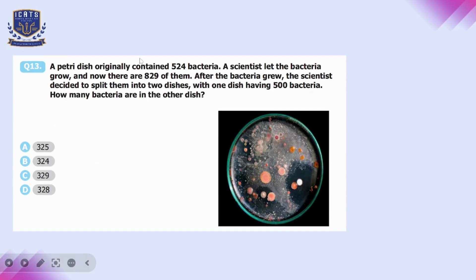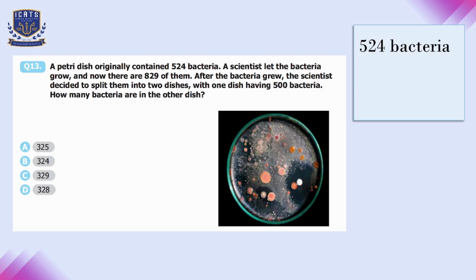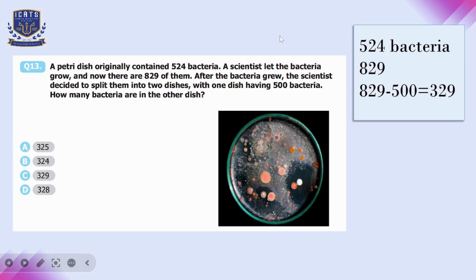Question number thirteen: a petri dish originally had 525 bacteria. After growth, there are 829. A scientist splits them into two dishes, with one dish having 500 bacteria. To find the number in the other dish, subtract 500 from 829, giving 329. So option C is correct.